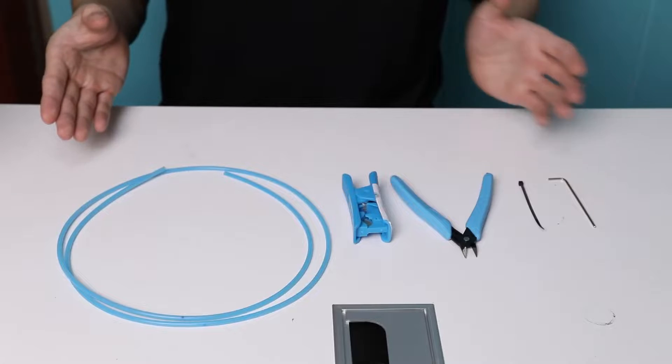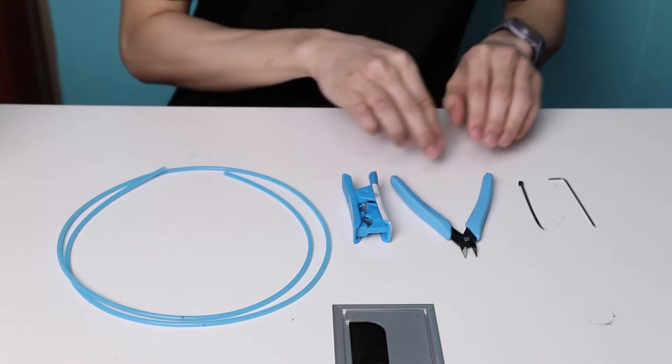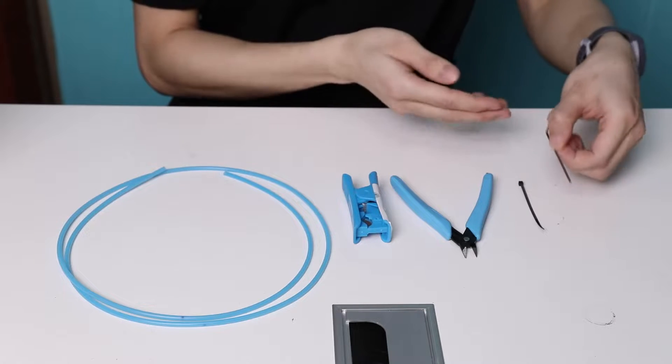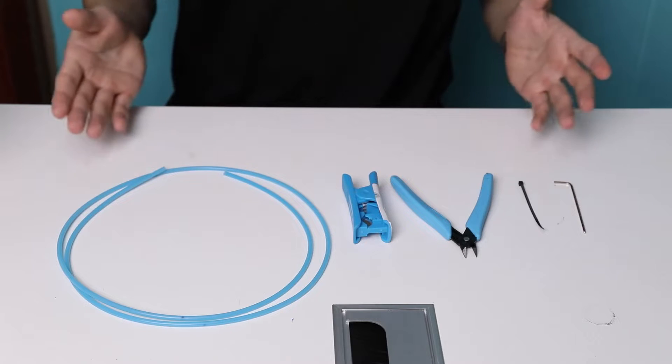Here's what we need on hand before starting: a new PTFE tubing, a tube cutter, a side cutter, a zip tie, and of course, a ball-end hex wrench that came with SV-01. That's it. Let's go.